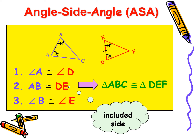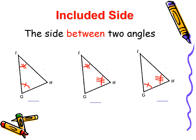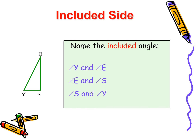What is an included side? It is the side between two angles. In the first diagram, the included side is GI. In the second diagram, the included side is HI. And in the third diagram, the included side is GH. Now, let us name the included side. In angle Y and angle E, the included side is YE. In angle E and angle S, the included side is ES. And in angle S and angle Y, the included side is SY.